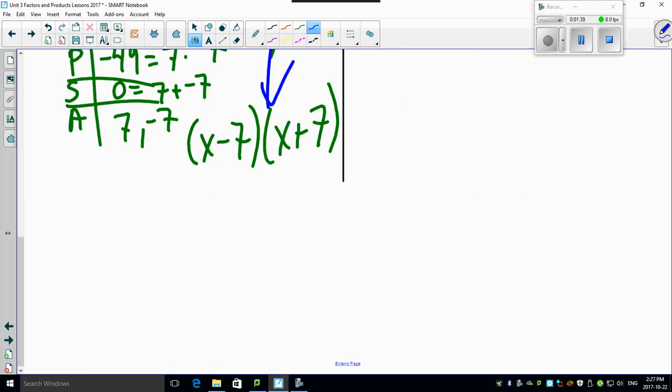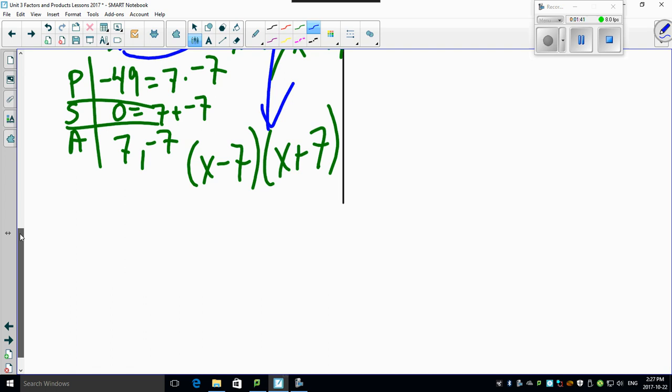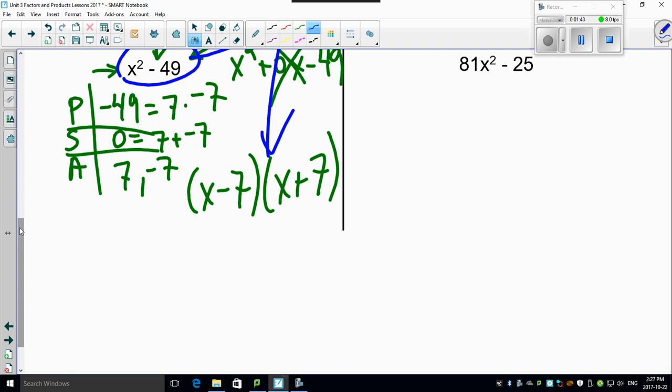Let me show you how you go from one to the next in one easy step. Look, that's square rootable, isn't it? Yes. x squared square rooted is just x. 49 square rooted is just 7 and 7. And because it's a difference of squares, you make one a minus, one a positive, and you're done.